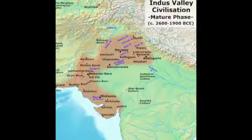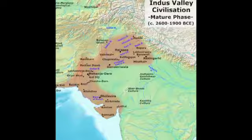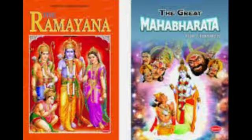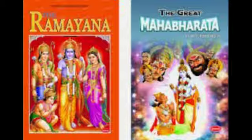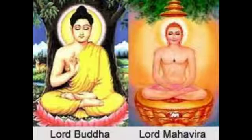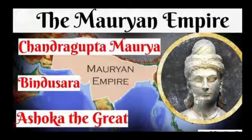Question 9: The Indus Valley civilization is also called Harappan civilization. Question 10: The Indus Valley people were urban. Question 11: The two great epics of the later Vedic period were the Ramayana and Mahabharata. Question 12: Gautam Buddha was a contemporary of Lord Mahavira.